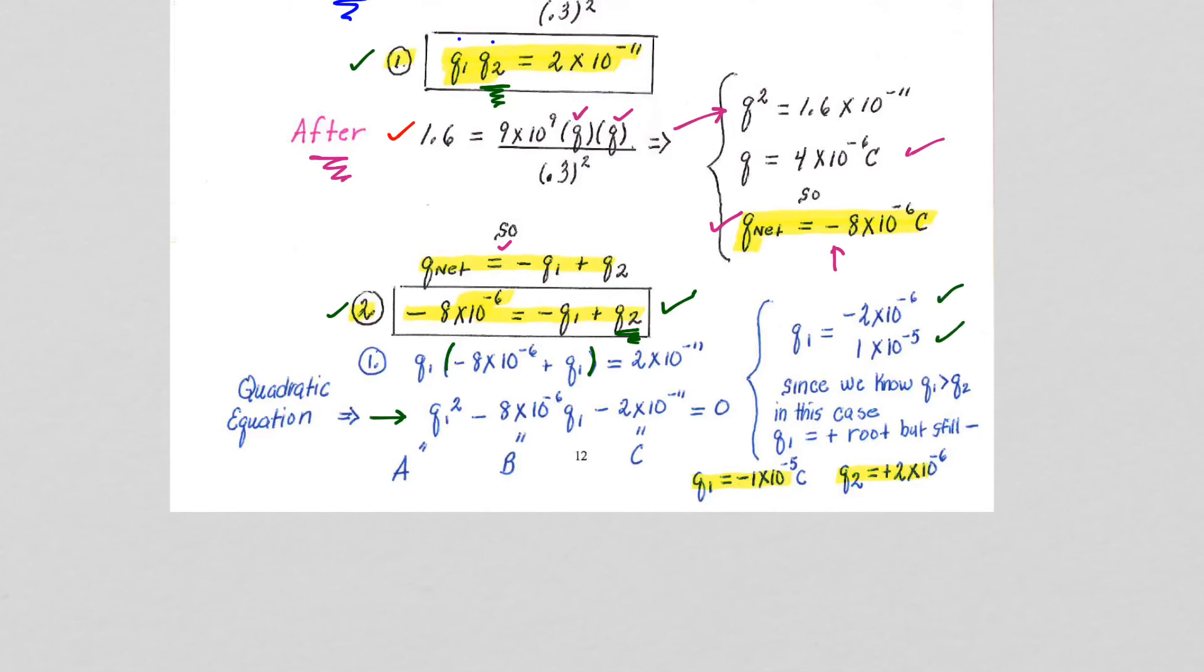And here we have to be a little careful again at the end, because 1 times 10 to the minus 5 is bigger than 2 times 10 to the minus 6, and I know that Q1 is greater than Q2. So even though my roots, when I took the quadratic equation, gave me inverted numbers, I have to flip them back because Q1 is negative and bigger than Q2, and this, of course, are the correct answers.